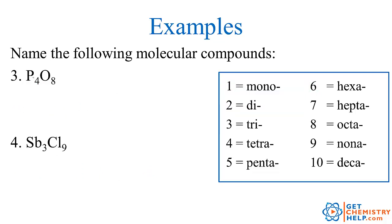P4O8. So four phosphorus. So four is tetra. So just tetraphosphorus. Eight oxygens. Well, eight is octa. Just like an octopus has eight legs. So octa. And the second one ends in ide. So octa oxide.